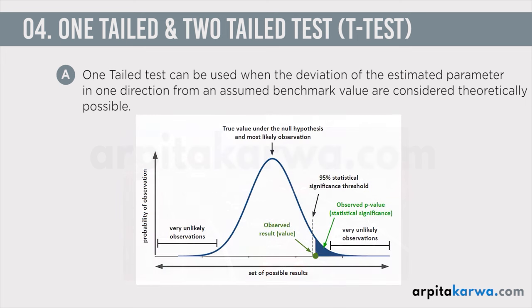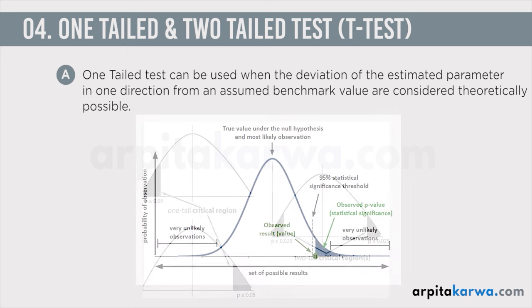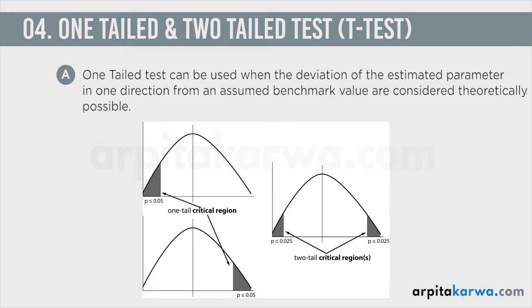So what does a one-tail test do? It tells you the deviation of a particular parameter — in our case, the average speed. Average speed is the parameter and we want to know the deviation in one direction: whether the average speed is more or less. When we want to see the variation in one direction, we use a one-tail test.